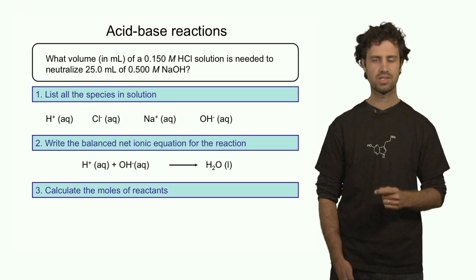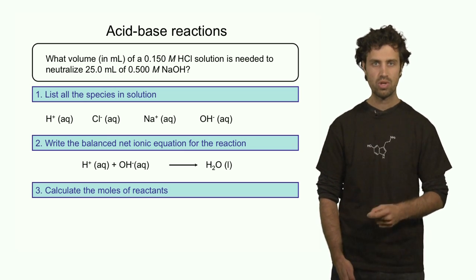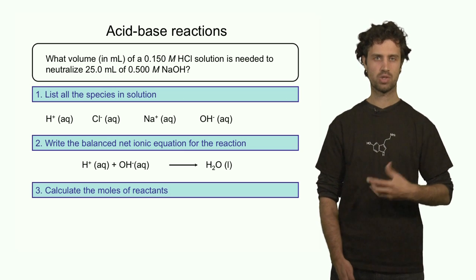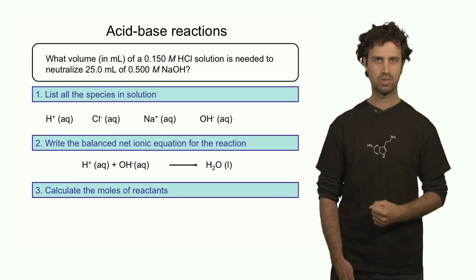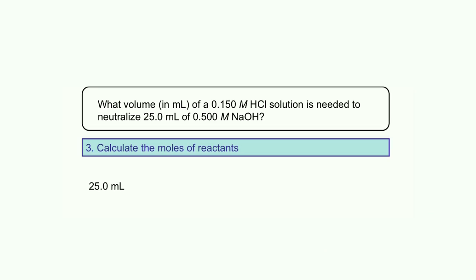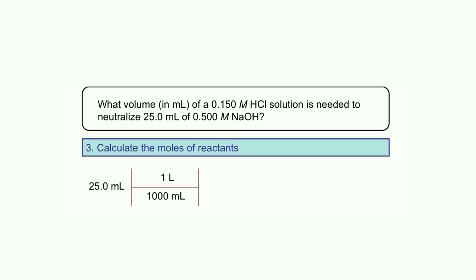Now what we want to calculate is how many protons we need to add. In order to determine that, we need to determine how many OH⁻s we have in the original solution. To find the concentration, we can use volume times molarity. The volume of the sodium hydroxide solution is 25 milliliters. We convert it quickly into liters, and then multiply by the molarity of the sodium hydroxide solution. We find 1.25 × 10⁻² moles of sodium hydroxide, which means we also have 1.25 × 10⁻² moles of hydroxide anions.